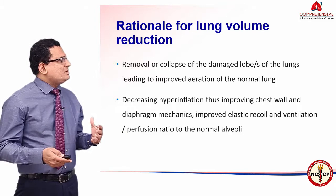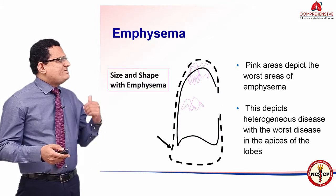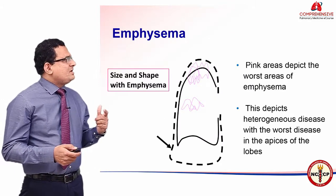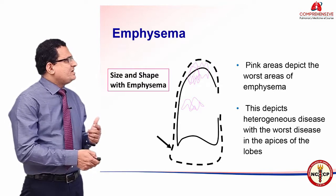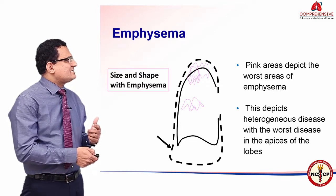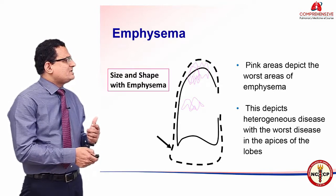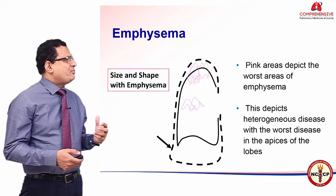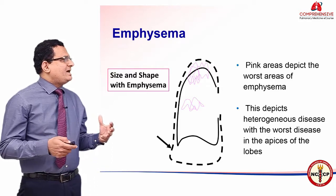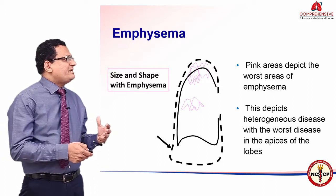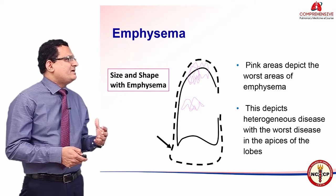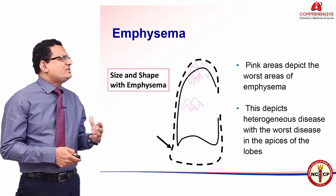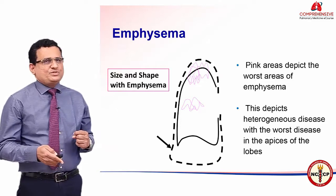Looking at this slide, the dotted lines show the size and shape of the emphysematous lung, and the pink areas depict the worst areas of emphysema. This depicts heterogeneous disease with the worst disease in the apices of the lobes.